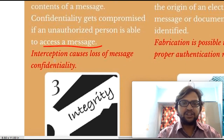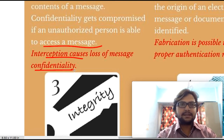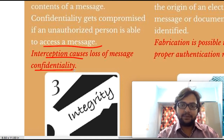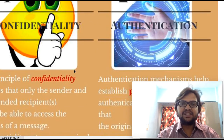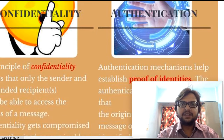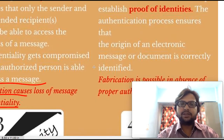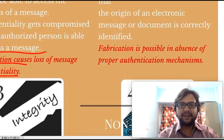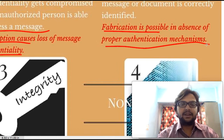Interception causes loss of message confidentiality, and hence it is very important that our message should not be interpreted. We have to send it using a very difficult algorithm so that it gets very difficult for a hacker to decrypt that particular message. Authentication means only an authorized person should get access — using a password or biometric system. Authentication is a mechanism that helps establish proof of identities and ensures the original origin of an electronic message is correctly identified.